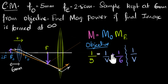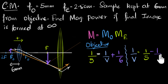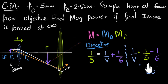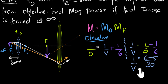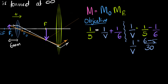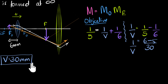Solving for 1/V: 1/V = 1/5 − 1/6. Taking LCM of 30: 1/V = 6/30 − 5/30 = 1/30. Therefore V = 30 millimeters. So in our diagram, the image distance from the objective is 30 millimeters, or about 3 centimeters.